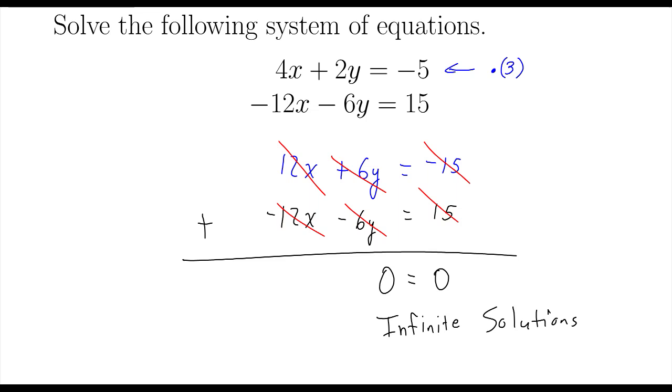In other words, if you think about this as a graph, you have a line, the first one, and then when you graph the second line, it's right on top of the first line. So, they cross everywhere. There's an infinite number of intersections because they are one on top of each other.